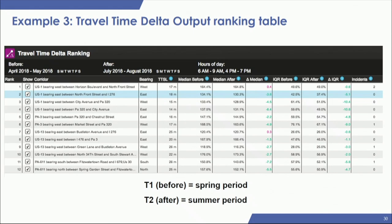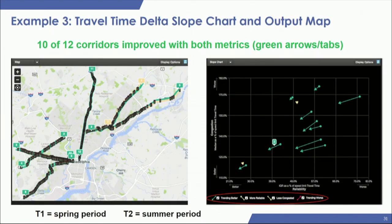You can see color coding within the table: the deltas indicate improvement or degradation — if negative, it's improving; if red, it did not improve from T1 to T2. Going back to the slope chart, in this example about 10 out of 12 corridors improved in both metrics, and two had mixed results. The green from the table carries through to the slope chart and also to the map view of the corridors.